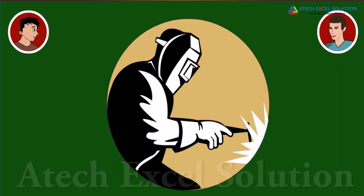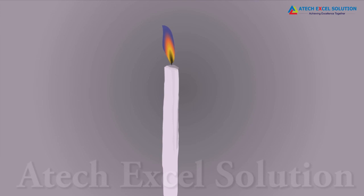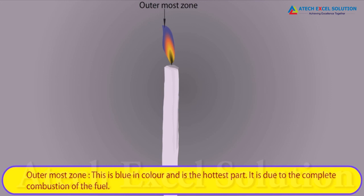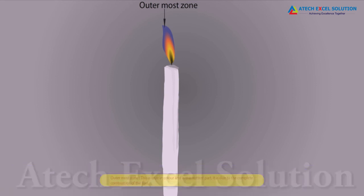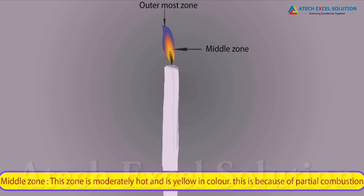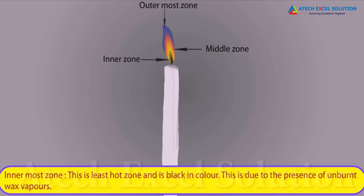That is why welders use this flame to get high temperature to weld metals. There are three different zones of a flame. The outermost zone is blue in color and is the hottest part, due to complete combustion of the fuel. The middle zone is moderately hot and yellow in color due to partial combustion of the fuel. The third zone is the innermost zone, which is the least hot and black in color, due to the presence of unburnt wax vapors.